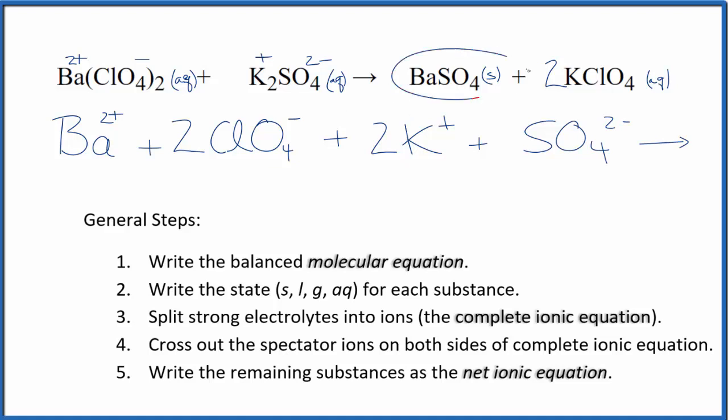For the products, we don't split solids up. This is a precipitate, it's a solid, so we're going to write BaSO4, keep it together. For the potassium perchlorate here, this is plus, and the whole perchlorate is 1 minus. So we have 2 potassium ions, and then we'll have 2 of these perchlorate ions, just like in the reactants.